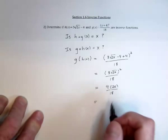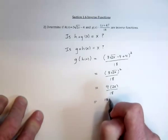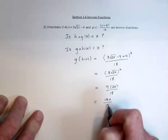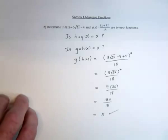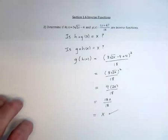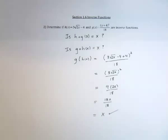And finally, we've got 9 times 2, so 18x divided by 18. Sure enough, it works. Everything was eliminated except for the x. So these are inverse functions.